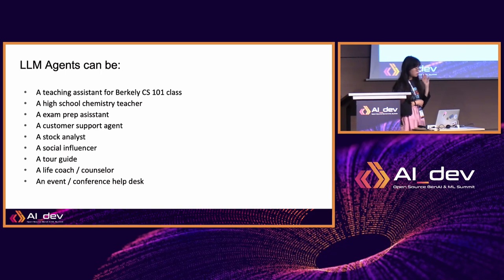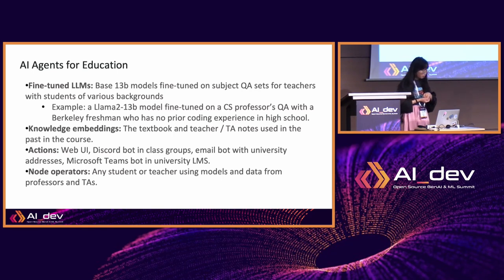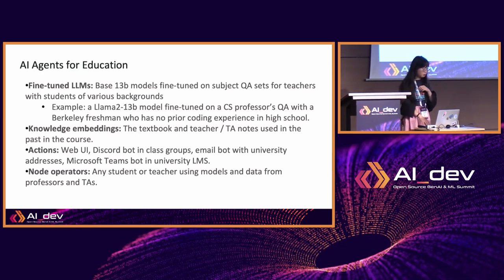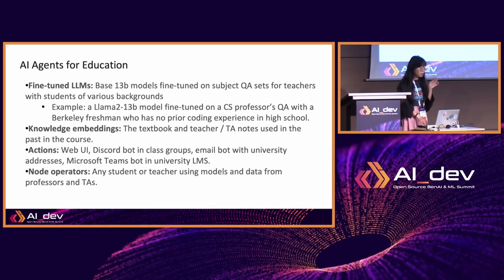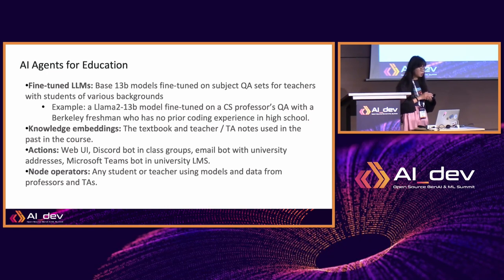Other possible use cases include a chemistry teacher, customer support, social influencer, tour guide, or life coach. For the UC Berkeley case specifically, we used a base 30-billion-parameter model and fine-tuned it on a subject question-and-answer set for teaching students of various backgrounds, enabling it to teach students with no previous coding experience how to code. We also embedded a knowledge base with the textbook and teaching assistant notes to help improve the performance of this bot.